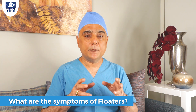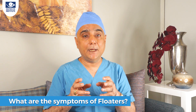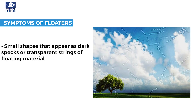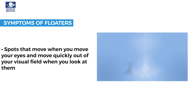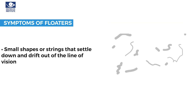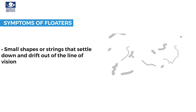Now let's get back to the main topic. The symptoms of floaters include small dark specks or knobby transparent string-like floating material that appear in different shapes in front of your vision. Sometimes there may be spots that move in front of your eye, and when you try to look at them they quickly move out of your field of vision. These spots are more noticeable when you look at a plain bright background such as a blue sky or a white wall.